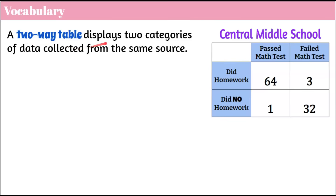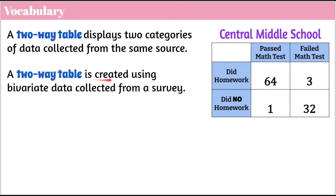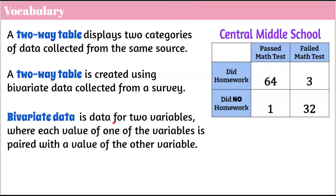A two-way table displays two categories of data collected from the same source. The data is: you did or did not do your homework, and you passed or failed your math test. We make a two-way table by using bivariate data collected from a survey. At Central Middle School, students were asked two questions: Did you do your homework? Did you pass your math test? And we collected it into the cells of this two-way table. Bivariate data is data for two variables, where each value of one variable is paired with the value of another variable.